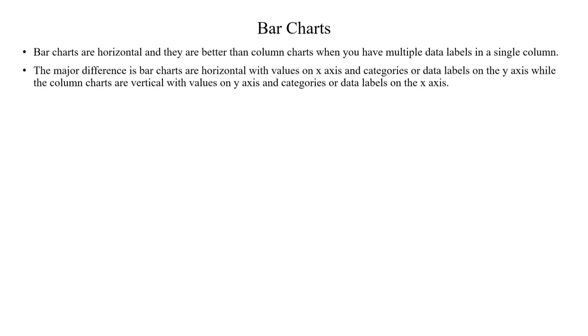The column chart is the opposite — it is vertical, and the values are on the y-axis. Categories or data labels like time, period, date, month, and year are on the x-axis.